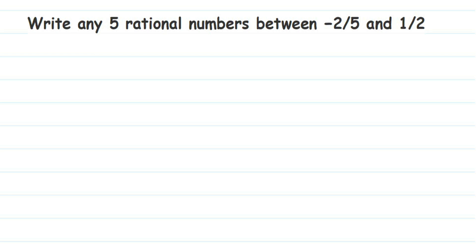Hello everyone. Here is a question on rational numbers: write any five rational numbers between minus two by five and one by two. This type of question is really important. They are asking us to find any five rational numbers. There are infinitely many rational numbers between two rational numbers, so your answer may not match with my answer — you can pick any five.